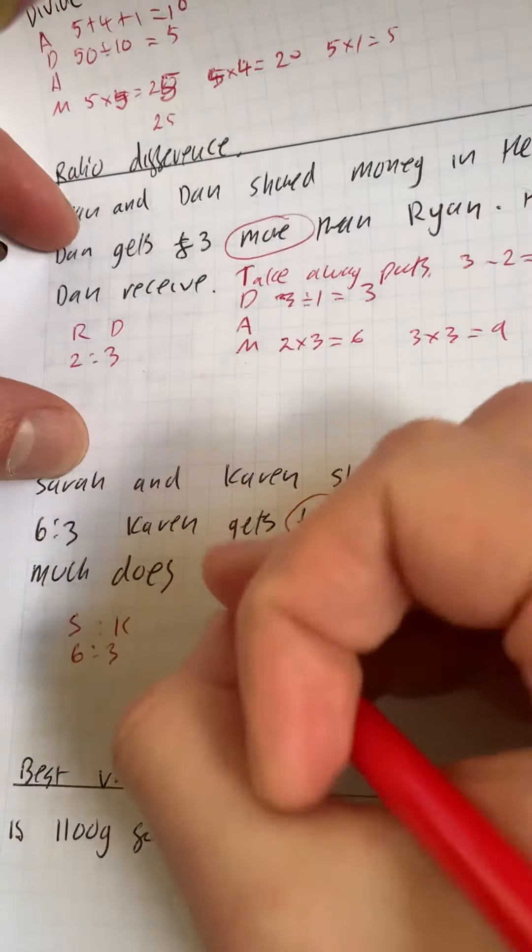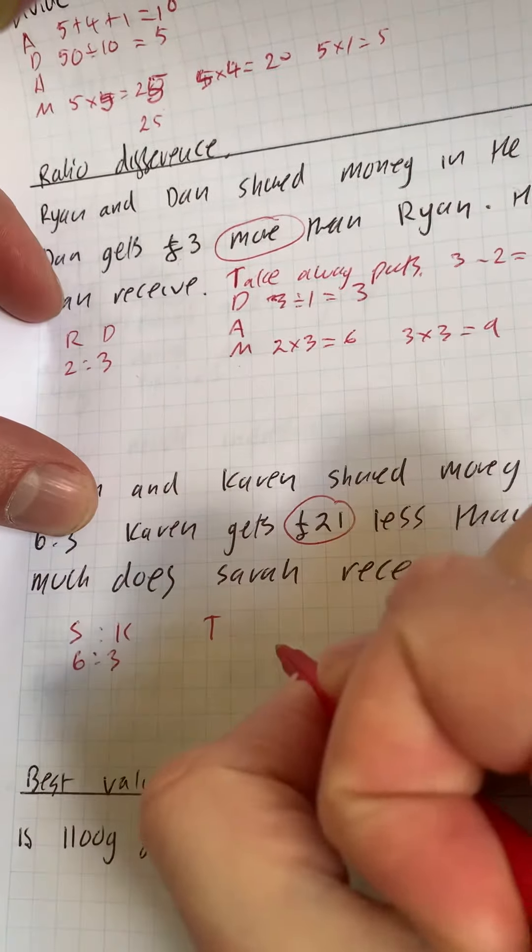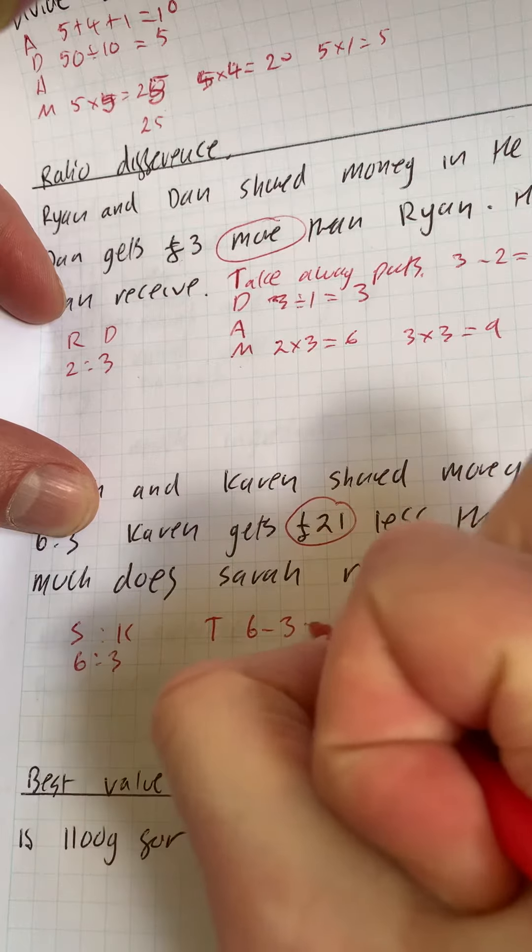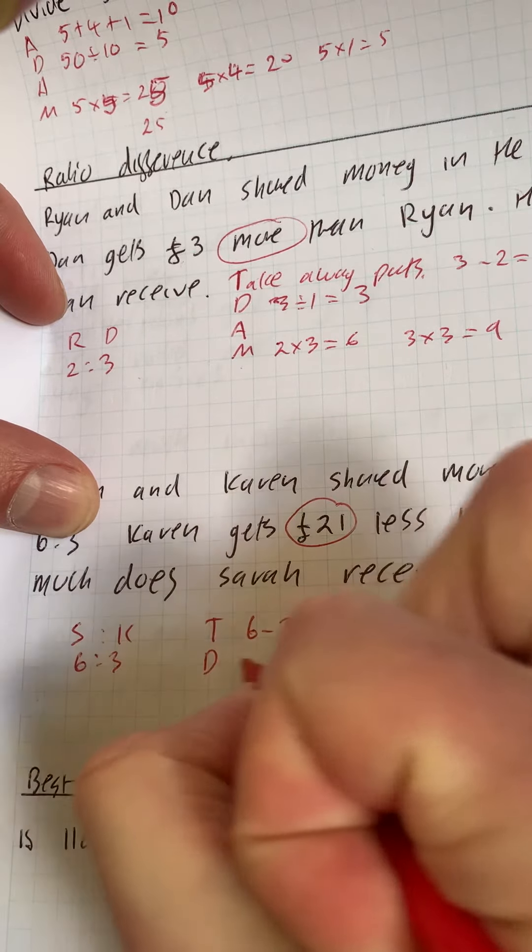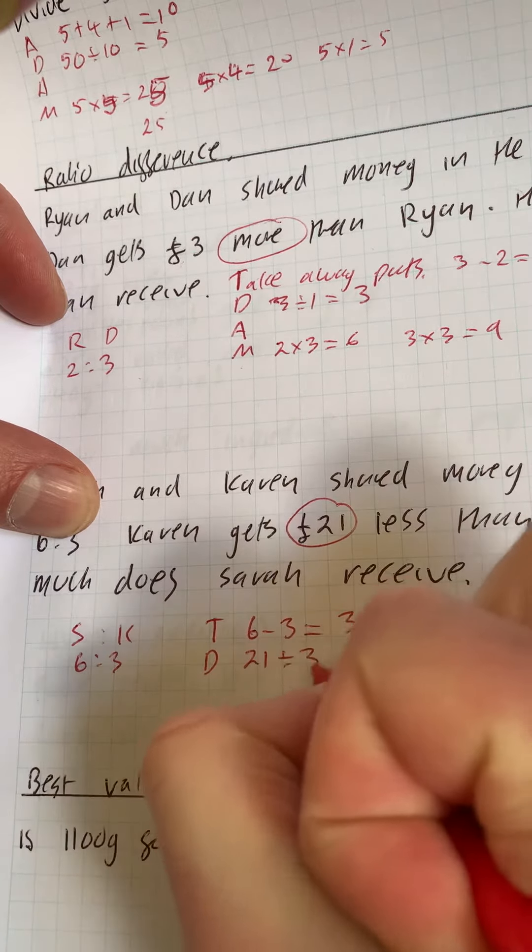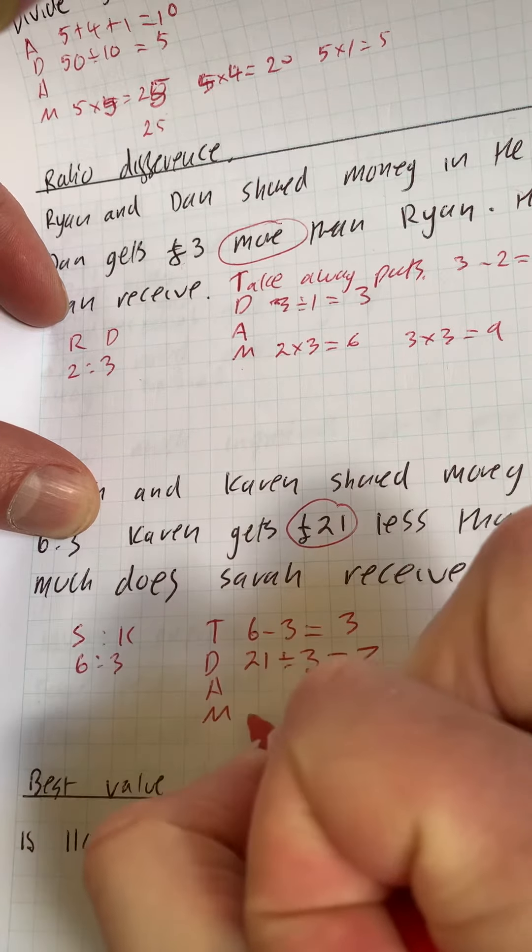So same trick. So T stands for take away parts. So six take away three is three. We then divide. So 21 divided by three is seven. And then we multiply.